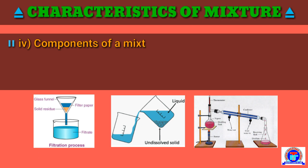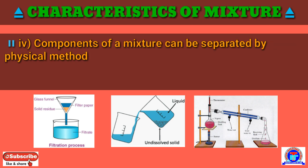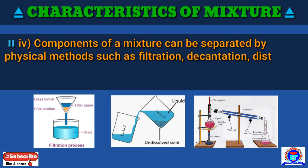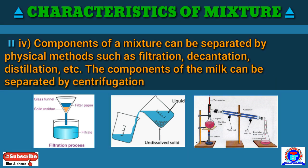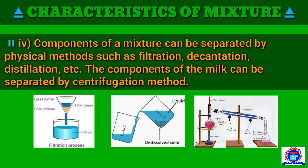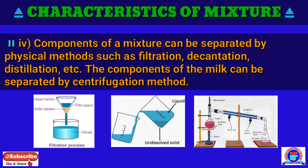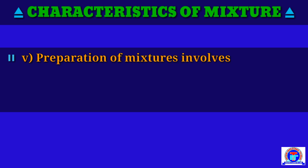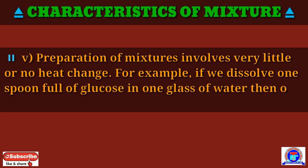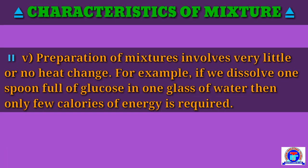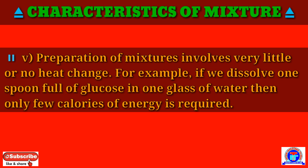Number 4: components of a mixture can be separated by physical methods such as filtration, decantation, distillation, etc. The components of milk can be separated by the centrifugation method. Number 5: preparation of a mixture involves very little or no heat change. For example, if we dissolve one spoonful of glucose in one glass of water, then only a few calories of energy are required.